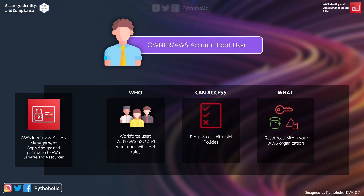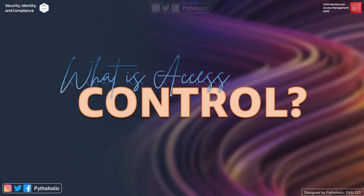AWS is not going to tell you what you can and cannot do — it's you who defines the permissions and lets AWS enforce them. So if anyone asks you about AWS IAM, remember: who can access what. You might have heard of the triple-A concept — authentication, authorization, and accounting. Keep that phrase in mind as we move on.